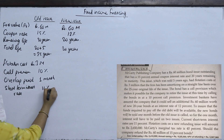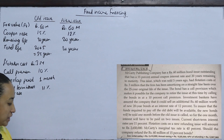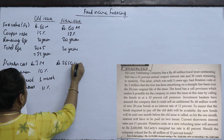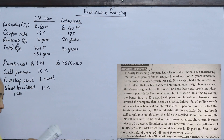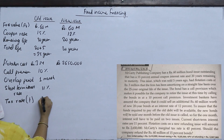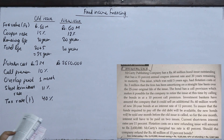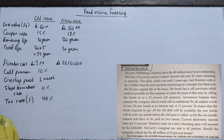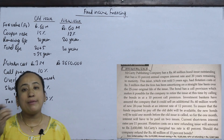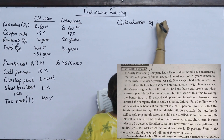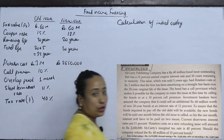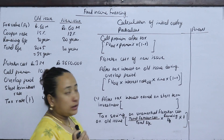The investment rate is 11%. Flotation cost on the new refunding issue will amount to Rs. 26,50,000. MCCart's marginal tax rate is 40%. The question is: should the company refund the Rs. 60,000,000 of 15% bonds? We need to calculate the initial outlay and then the annual savings to find the NPV.